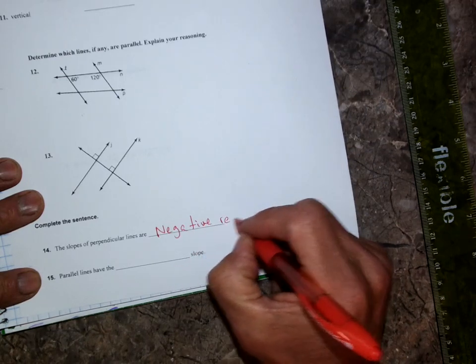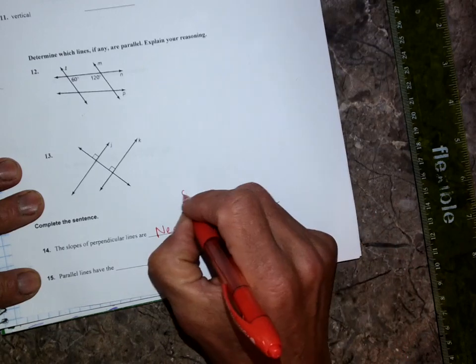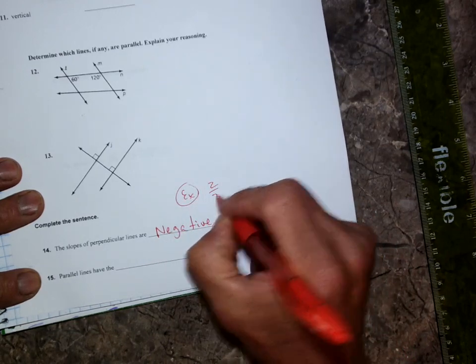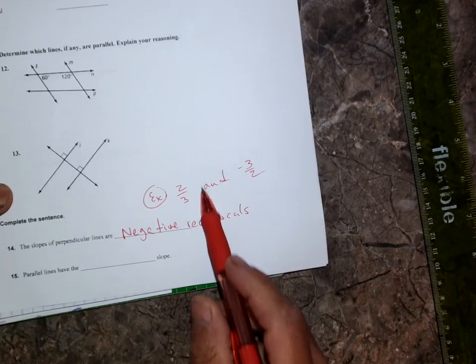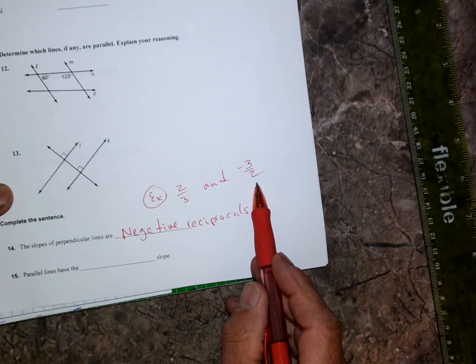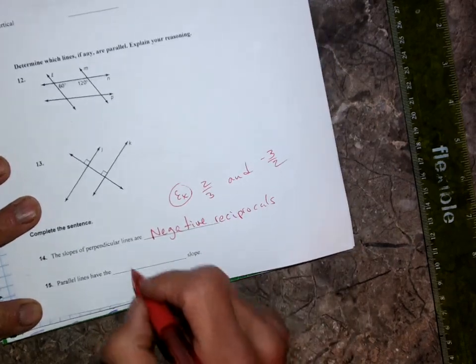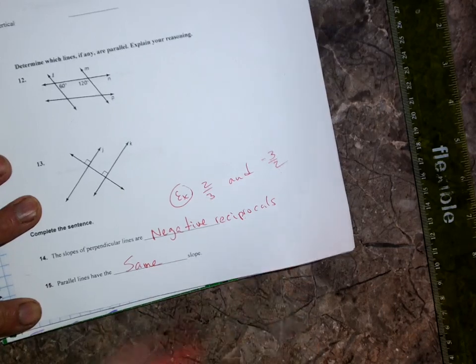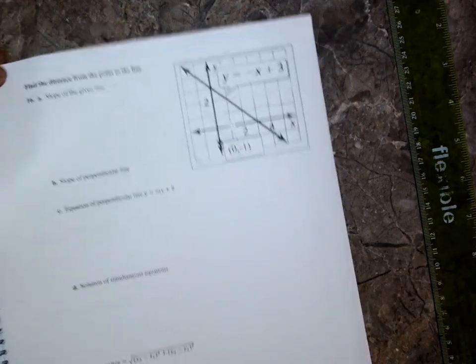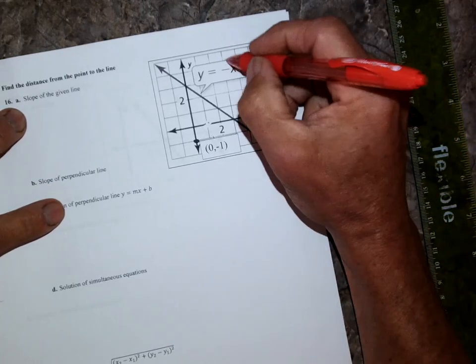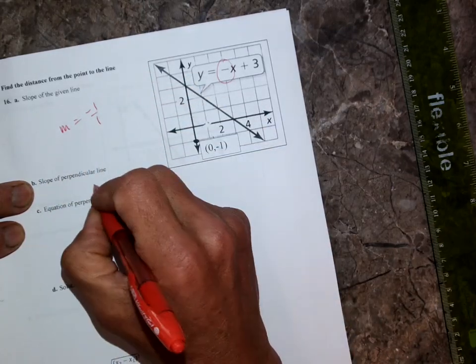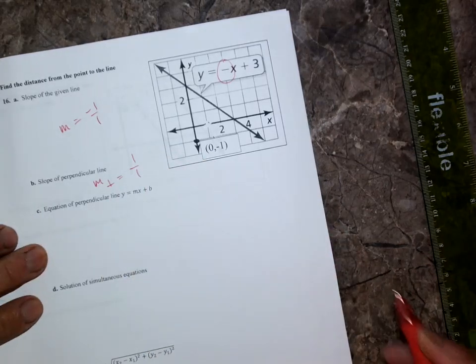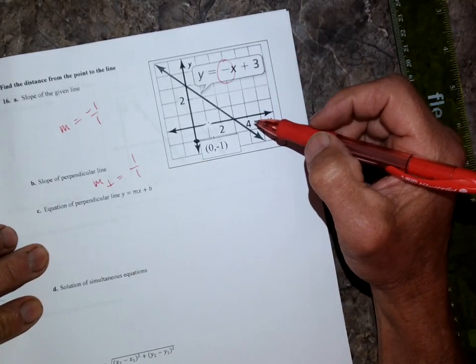Slopes of perpendicular lines are negative reciprocals. Give me an example like maybe two-thirds and the opposite would be negative 3 over 2. See how they're flipped, upside down, and one's positive, one's negative. Parallel lines have the same slope. When the slope of the given line is negative 1, a perpendicular line's got to be the opposite, positive 1 over 1. The equation of the perpendicular line goes through this point here using y equals mx plus b.